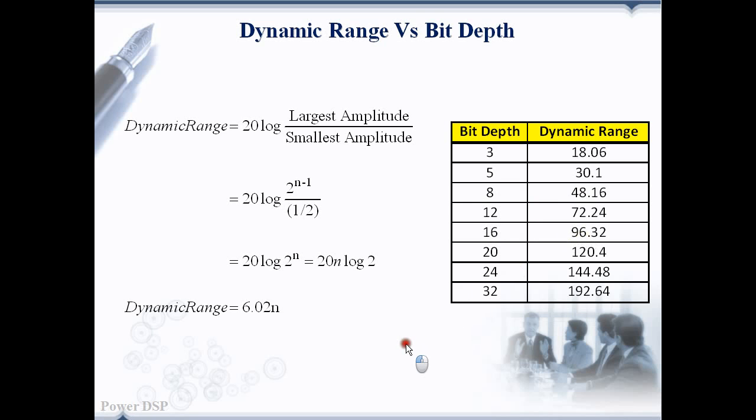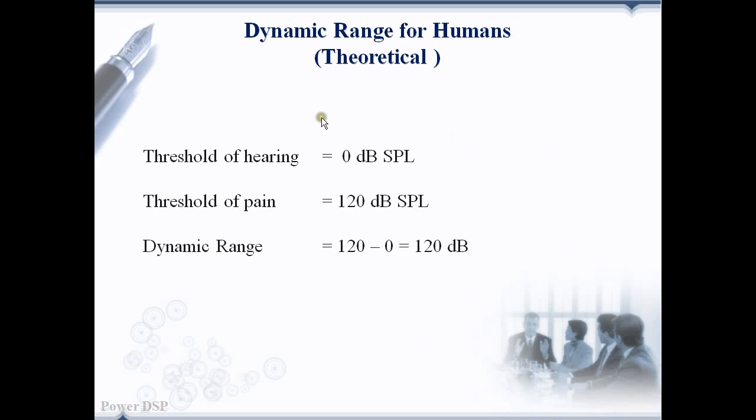Let's see what is the dynamic range for human beings. The quietest sound that the human ear can hear is just above 0 dB SPL. So the threshold of hearing is approximately 0 dB SPL. The threshold of pain, that is, the loudest sound that human can hear is around 120 dB SPL. The dynamic range is therefore the difference between these loudest and quietest sound levels and it is equal to 120 dB.